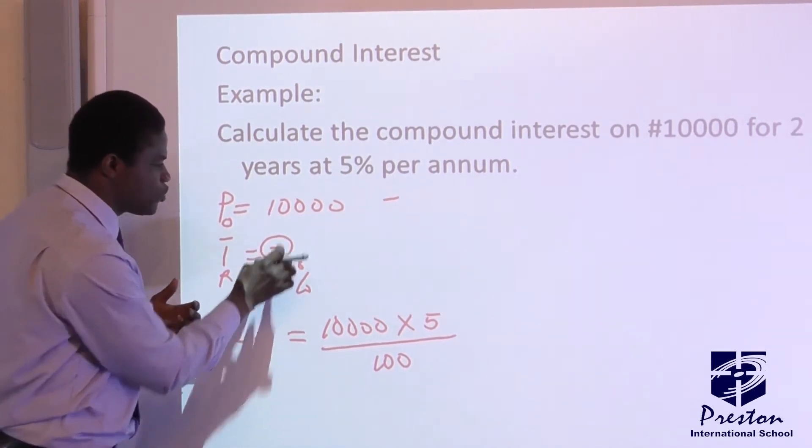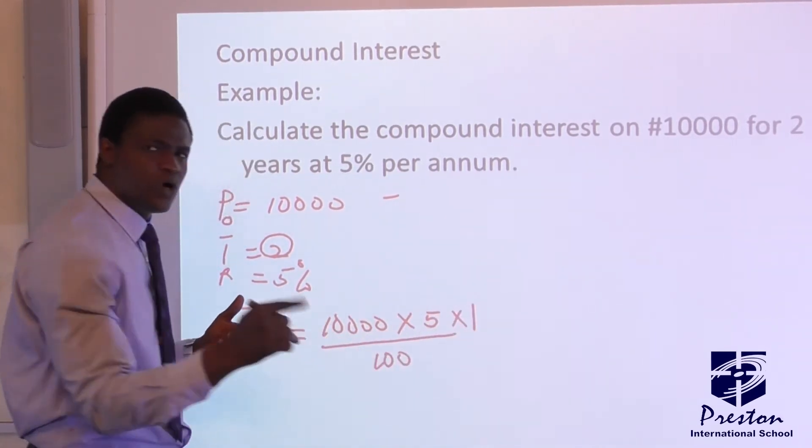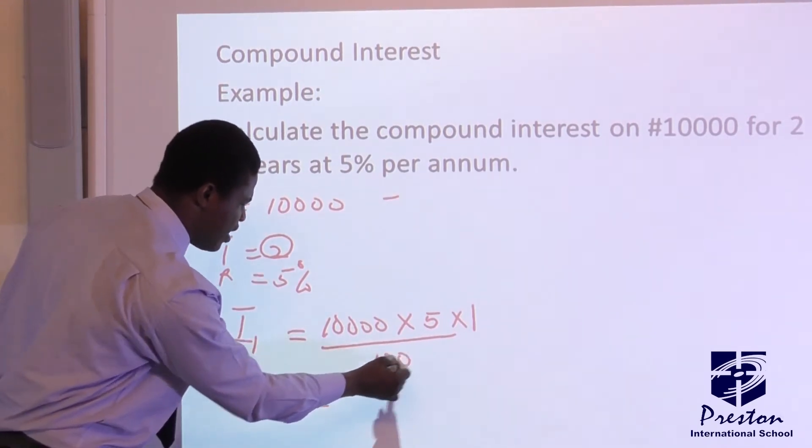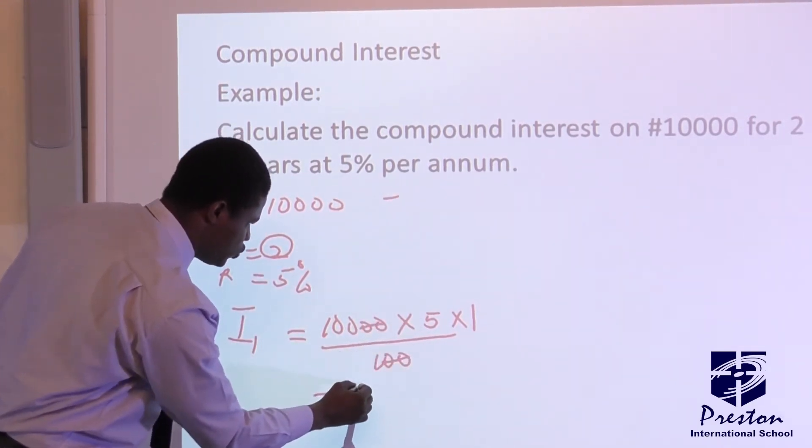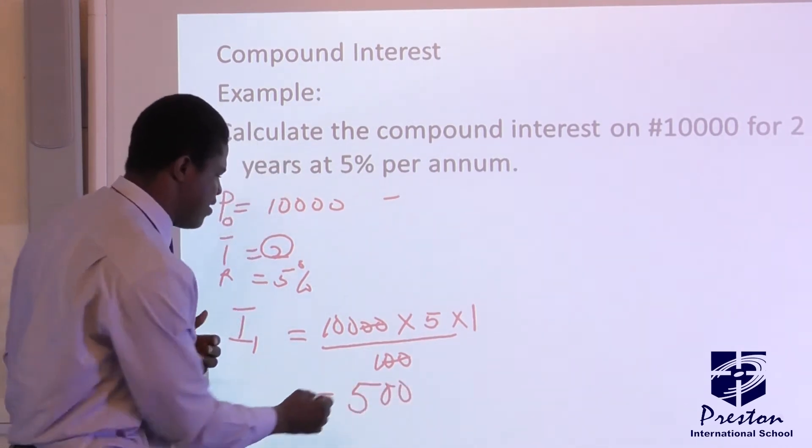If it is simple interest, I will just put these two in. We are good to go. But here now, your year is always 1. We calculate it 1 after the order. So at the end of the day, we have, this will give us 500 Naira.